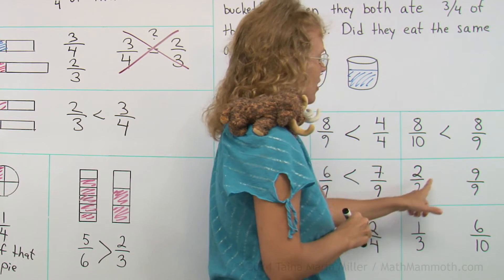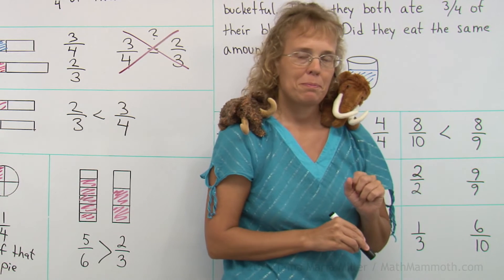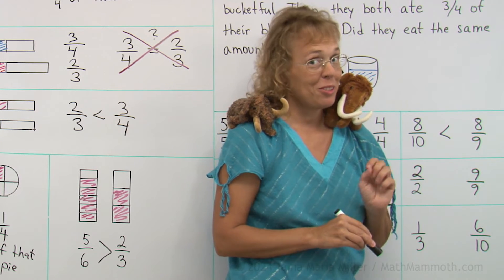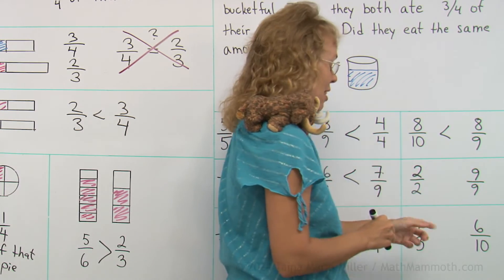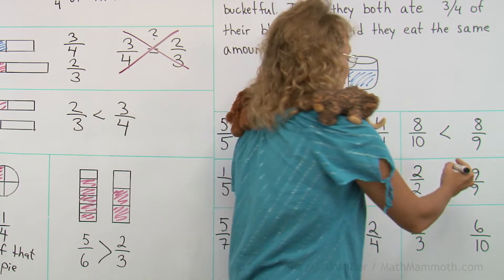Two-halves and nine-ninths. Don't get fooled. Nine-ninths is the same as one whole pie. Now two halves is also one whole pie. These are equal.